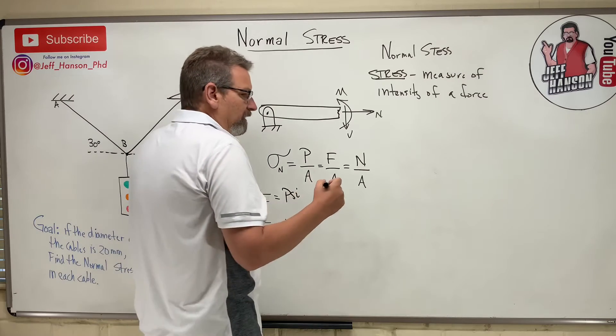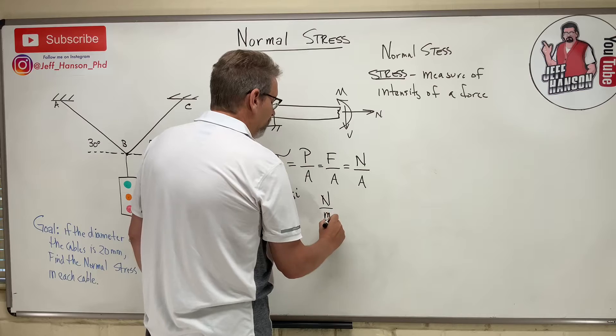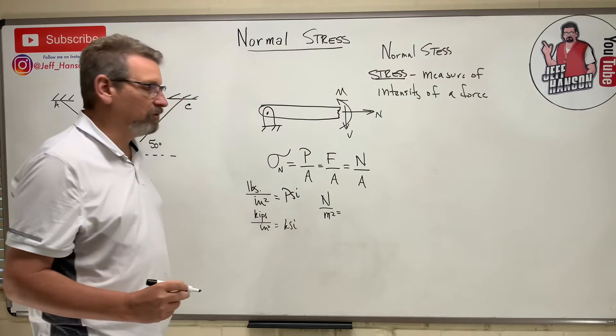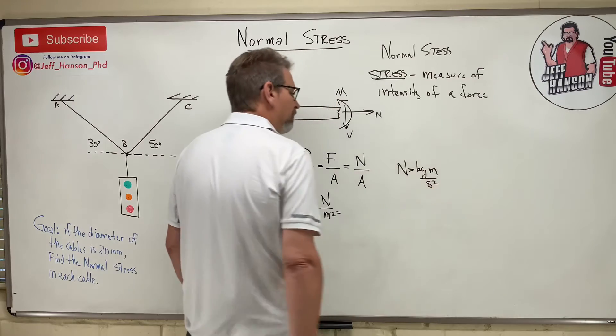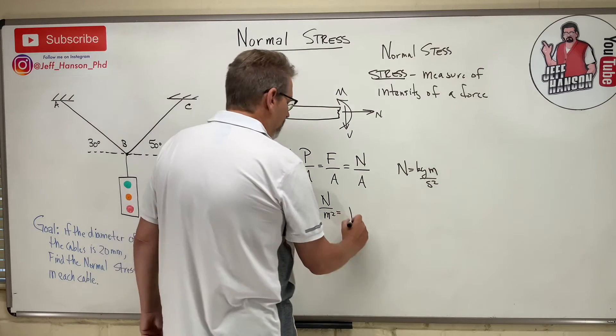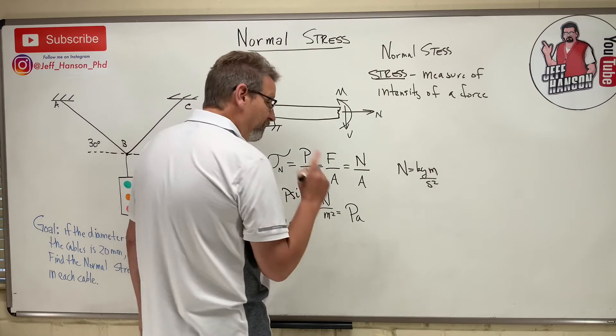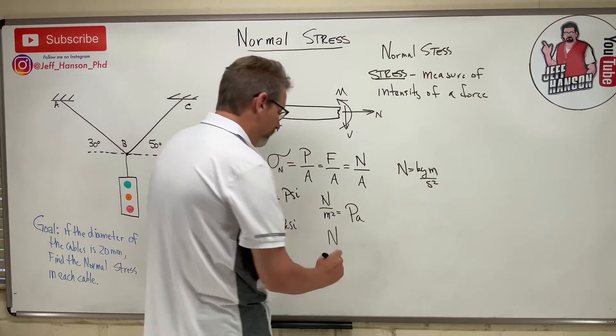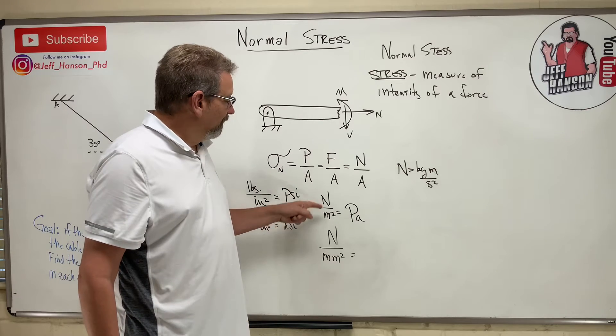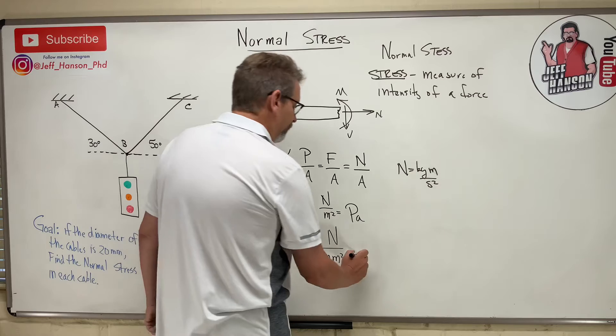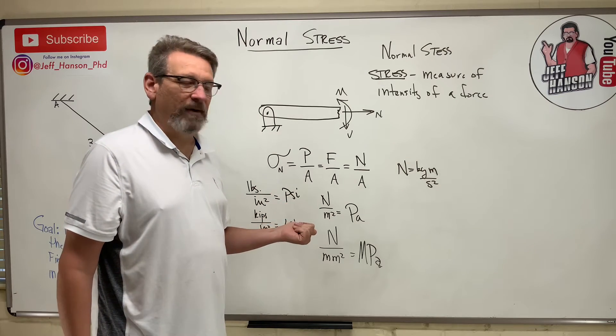In the metric system, which is what we all should be using, is newtons over meters squared. What is a newton over meter squared? A newton is a kilogram meter per second squared, and a newton over a meter squared is a pascal. Then there's one more that's very commonly used, and that is this one, I like this, this is my favorite one. Newtons over millimeter squared. The way I remember this is newtons over meter squared is pascal. This one has an extra M on it, so where does the extra M go? Right there in the front. And that's a mega pascal.